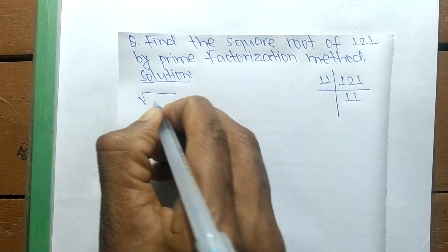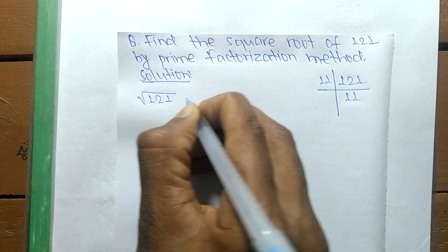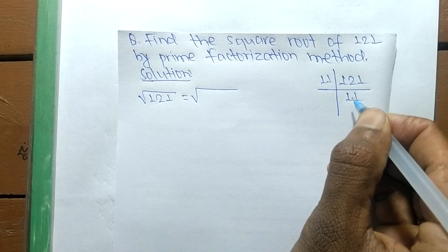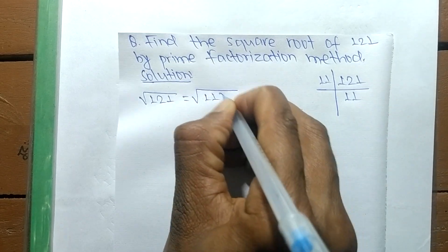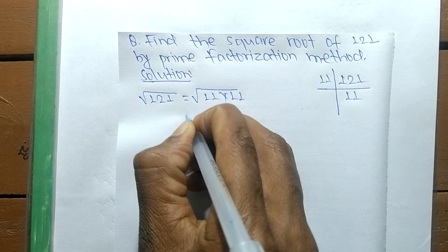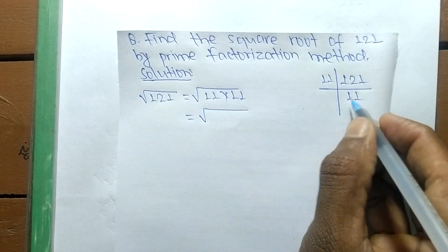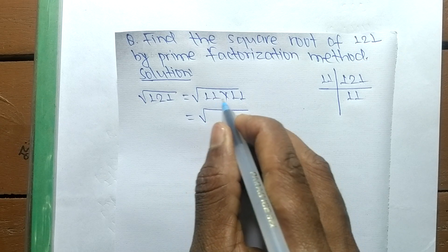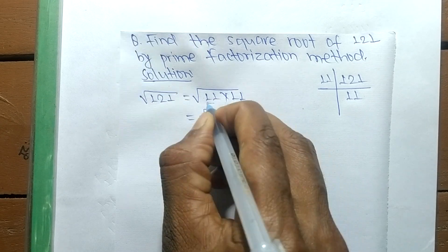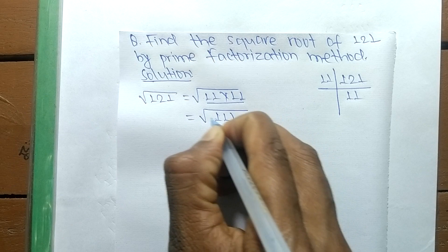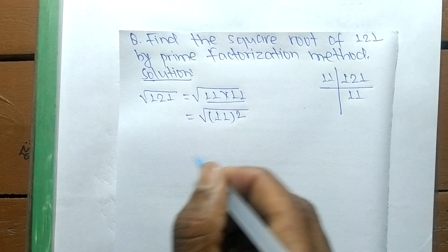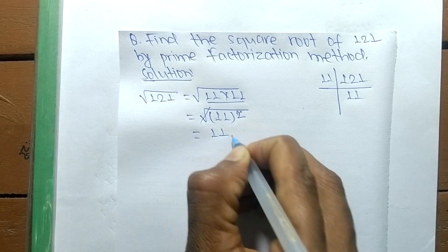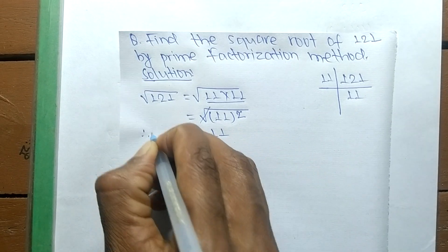The square root of 121 can be written as the square root of 11 times 11. We group these prime factors to form 11 squared. Since the square and the square root cancel each other, the remaining number is 11.